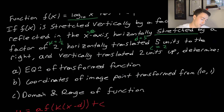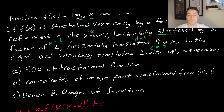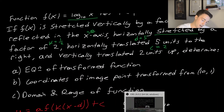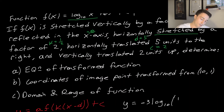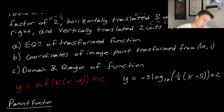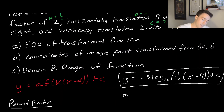Part A asks to determine the equation of the transformed function. Once we have all the variables, it's straightforward — we plug them into y = a·f(kx − d) + c. The parent function is log base 10. Our a value is −3, our k value is 1/2, so we have: y = −3 · log base 10 of (1/2 · x − 5) + 2. That is our answer to part A.